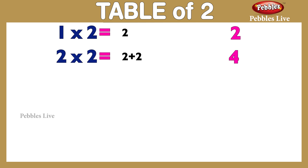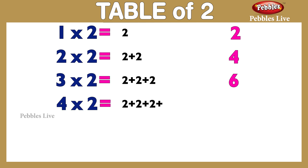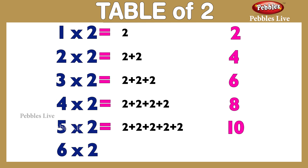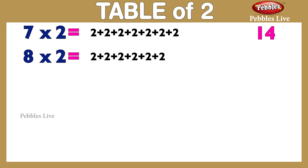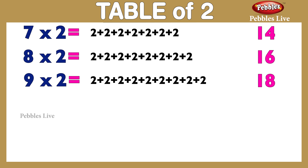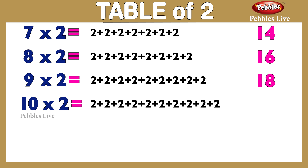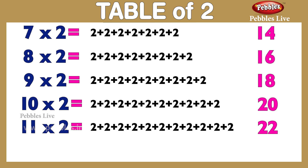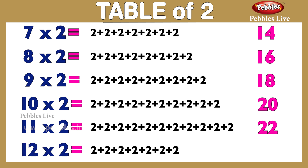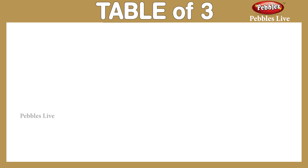Table of 2: 1 two is 2, 2 twos are 4, 3 twos are 6, 4 twos are 8, 5 twos are 10, 6 twos are 12, 7 twos are 14, 8 twos are 16, 9 twos are 18, 10 twos are 20, 11 twos are 22, 12 twos are 24.